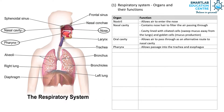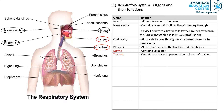Do take note of the next few organs and their location as they are very important. The larynx contains the voice box. The trachea contains cartilage to prevent the collapse of the trachea. Similar to the nasal cavity, it is lined with ciliated cells and goblet cells.